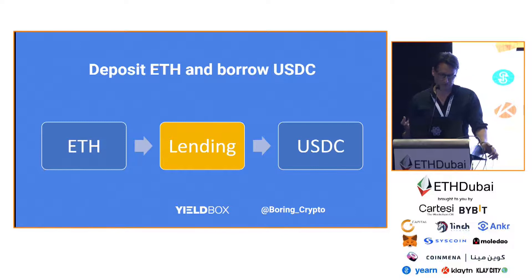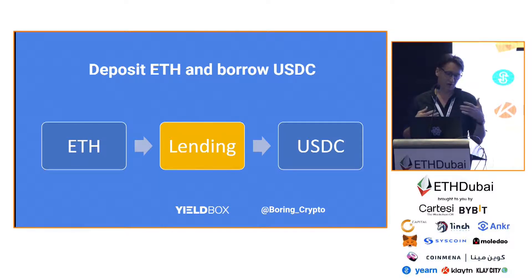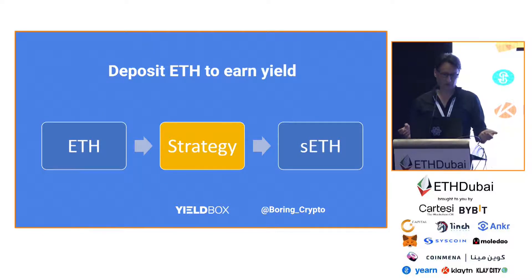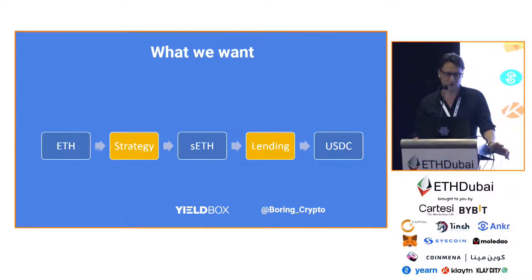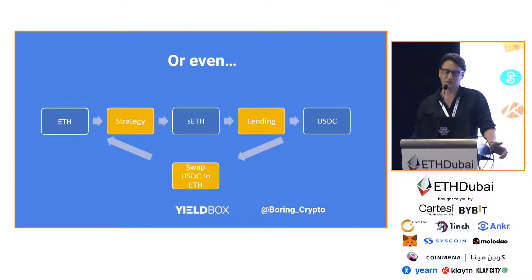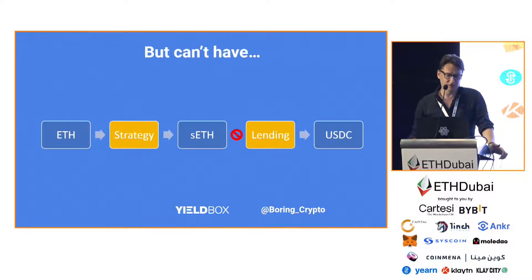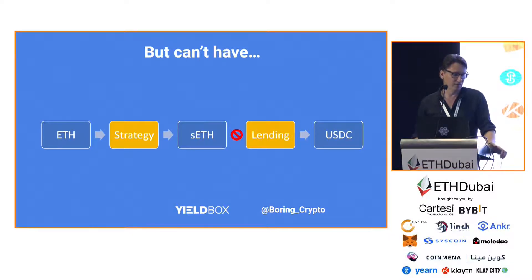It's all about capital efficiency. Let's say I have some ETH. I might want to put it in a lending platform and borrow some USDC against it, but also use that same ETH to put into a strategy and make some yield. So what I actually want to do is put my ETH in a strategy, get some strategy token, then put that into the lending platform and borrow some USDC. Or even crazier, take that USDC, swap it back to ETH, loop it again, and get a little more leverage. Unfortunately, these days, whatever token the strategy gives you cannot be used in the lending platform because it just wants straight ETH.